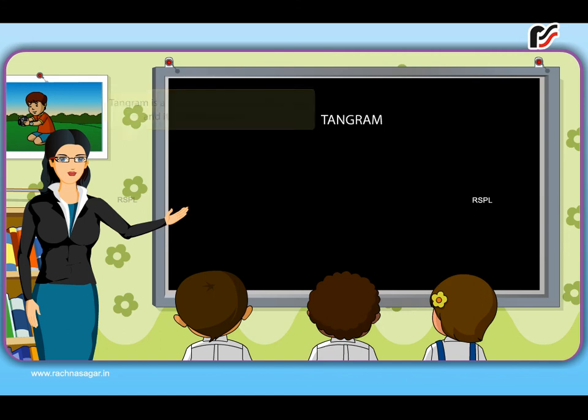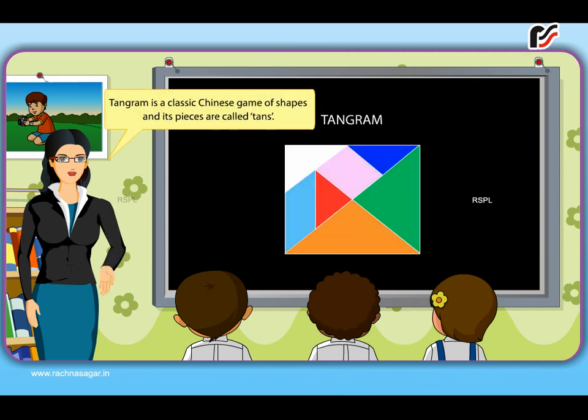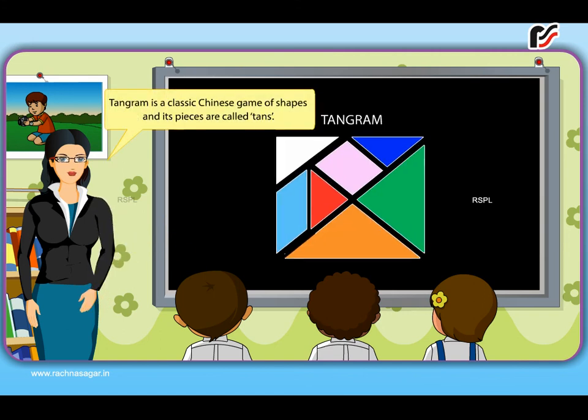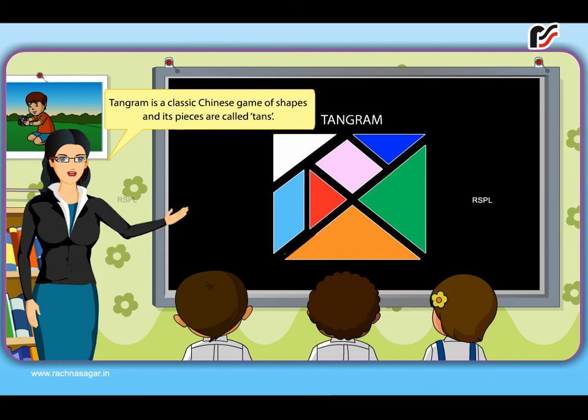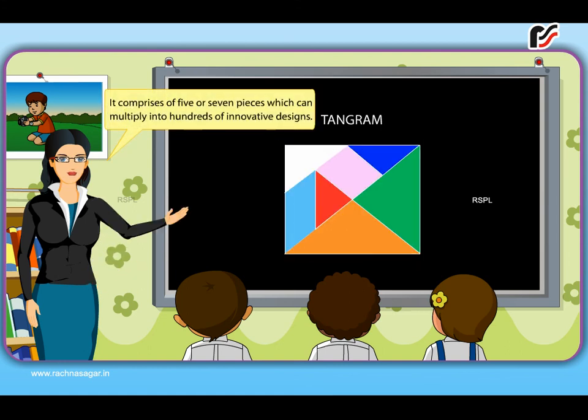Tangram. Tangram is a classical Chinese game of shapes and its pieces are called tans. It comprises of five or seven pieces which can multiply into hundreds of innovative designs.